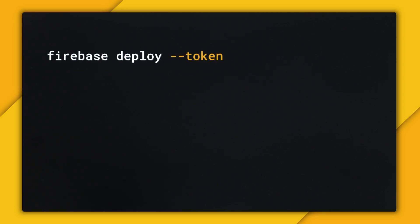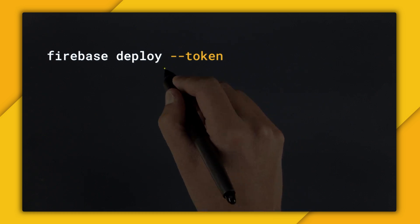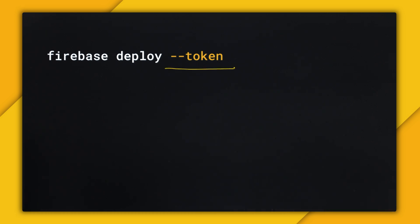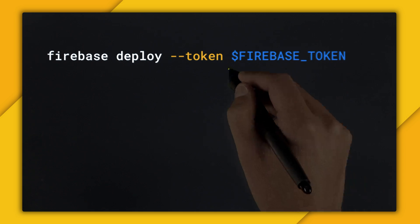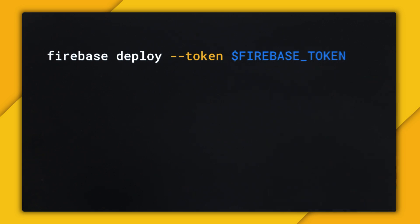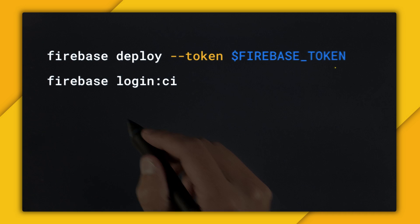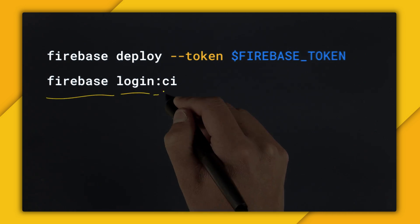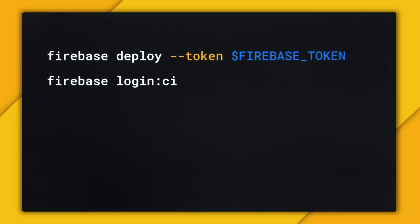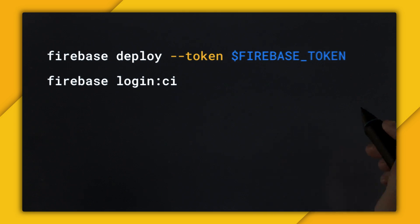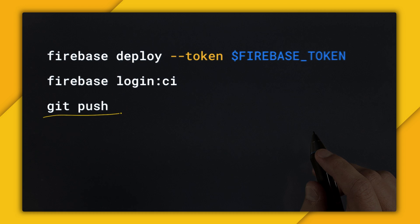In those cases, the Firebase command line actually has a flag called --token, and what --token takes is a Firebase token. How do you get this Firebase token? You can get it by using the command firebase login:ci. This will make you go out to the browser and log in, and then it will print your token to the console. From there, we can set it up in Travis, and after that you just push to your GitHub repo, Travis will kick off, and if successful it will deploy to Firebase Hosting.